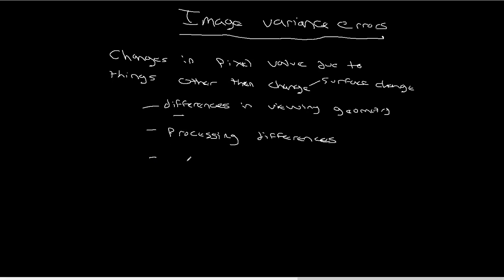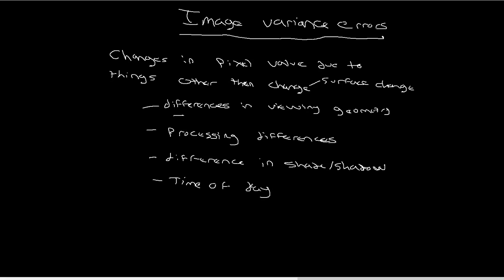Another factor is differences in shade and shadow — maybe there was a tall building constructed next to the thing you're looking at and it's now casting a shadow, which would affect the pixel value. Also, time of day if you're using something like a UAS or an airplane can have a huge difference on the pixel value. That sort of gets back into the viewing geometry issue. All of these things have nothing to do with the surface, but they can all impact the pixel value.